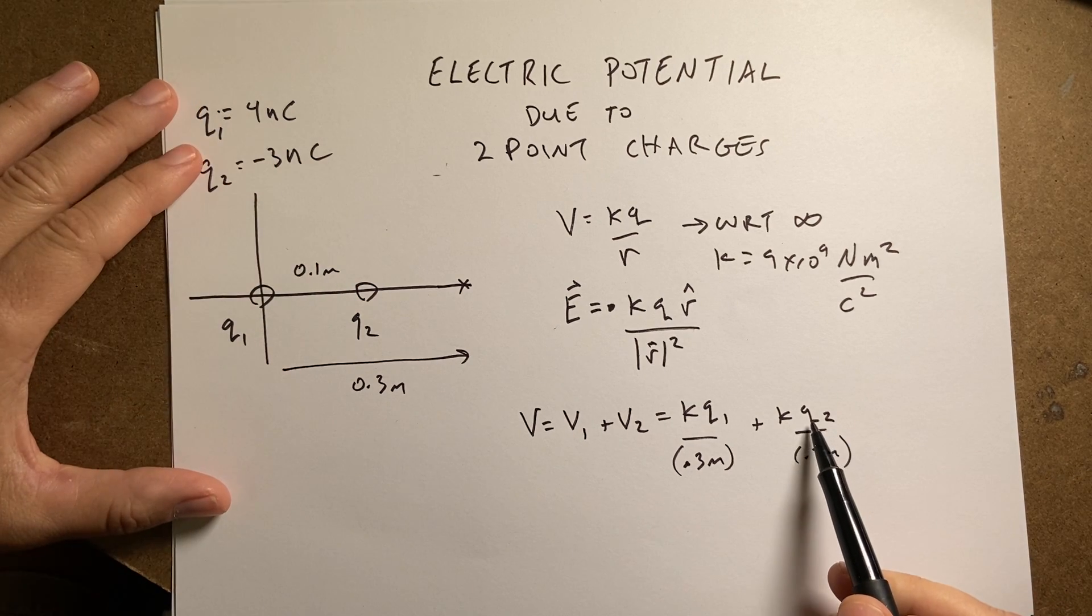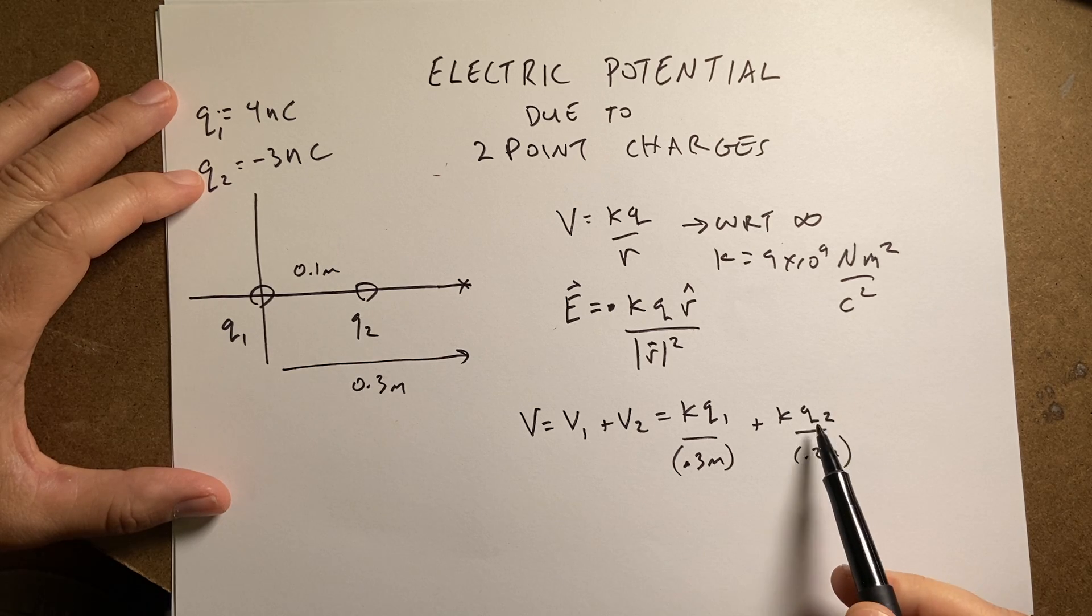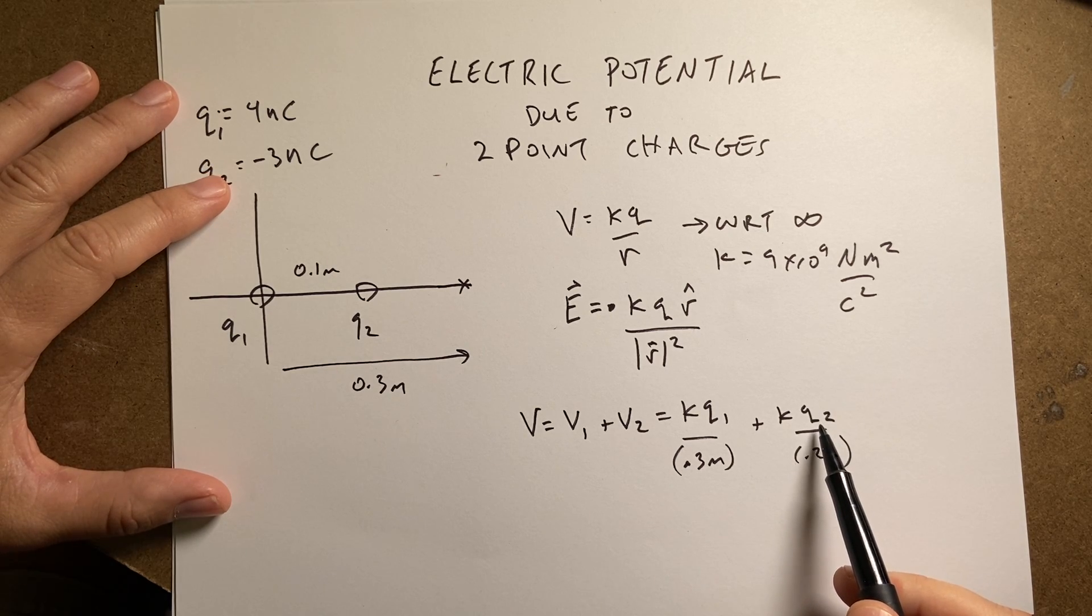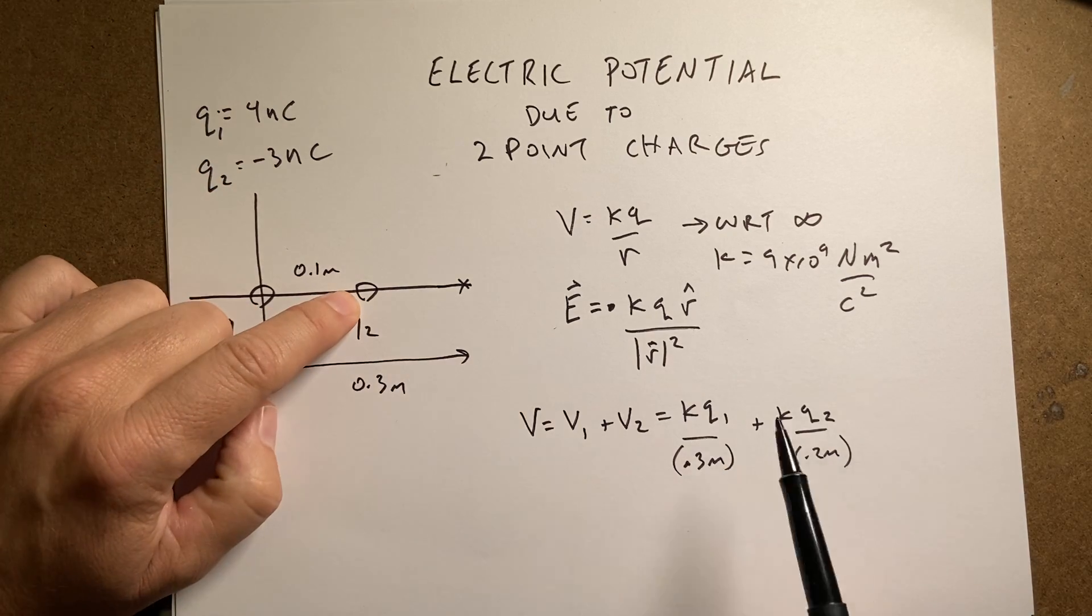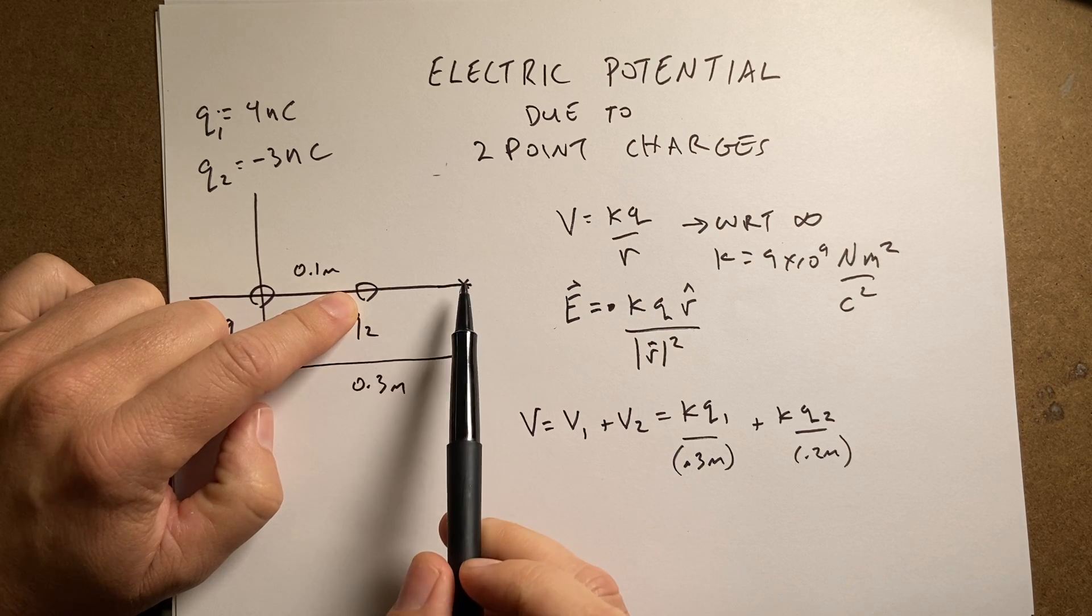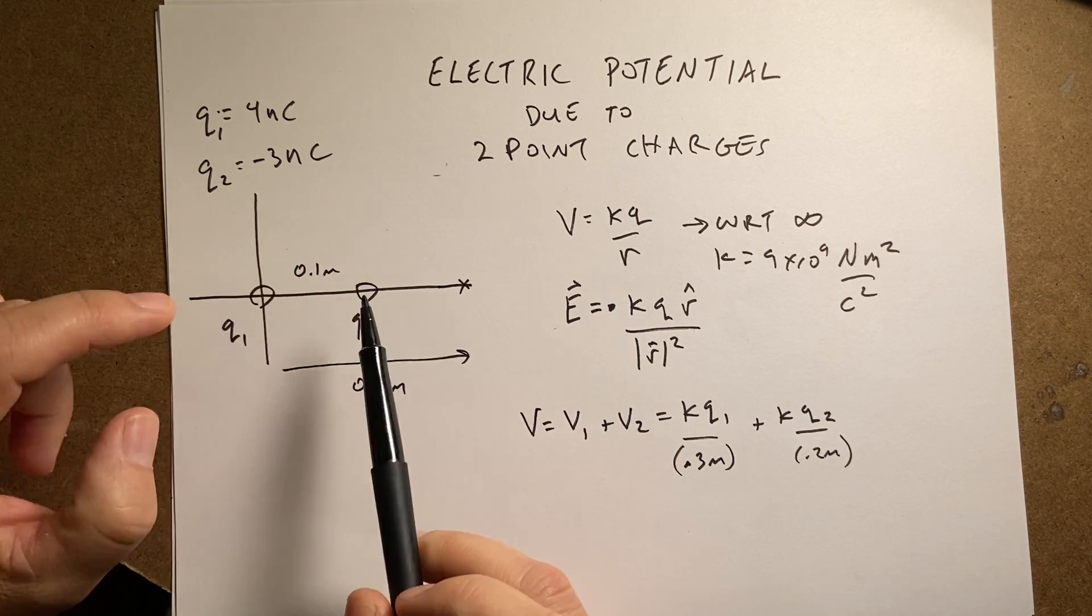Now, you'll notice that Q2 is negative. So, but I put it just as Q2 because you need to put a negative charge in here. Also, Q1 is greater, but Q2 is closer. So the electric potential due to Q2 is going to be more influential than Q1.